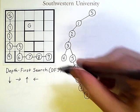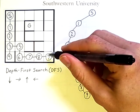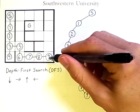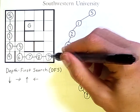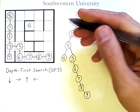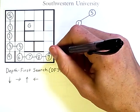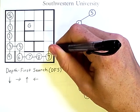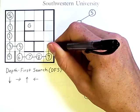From node 9, we consider going down, then right, then up — and up works. So from node 9 we go to node 10.